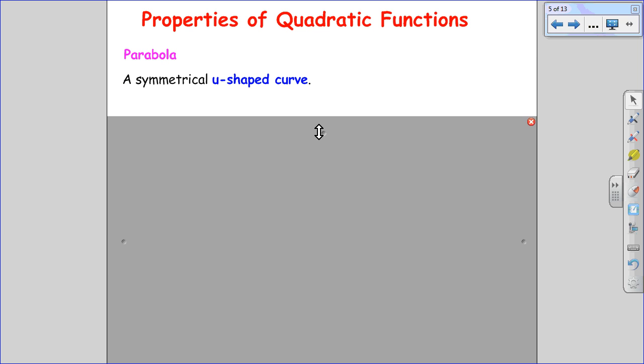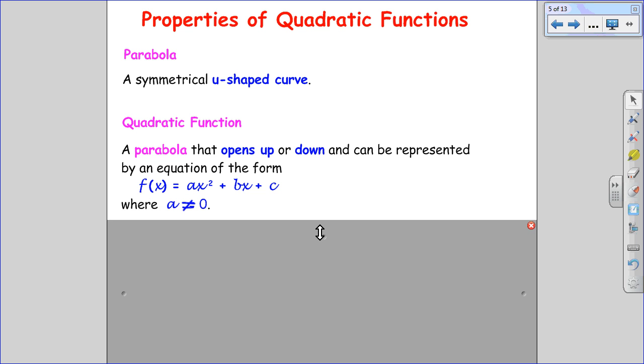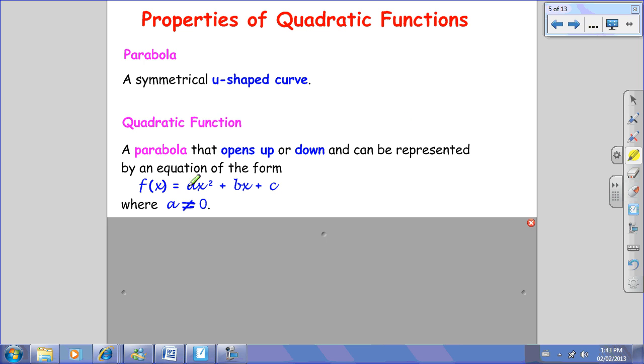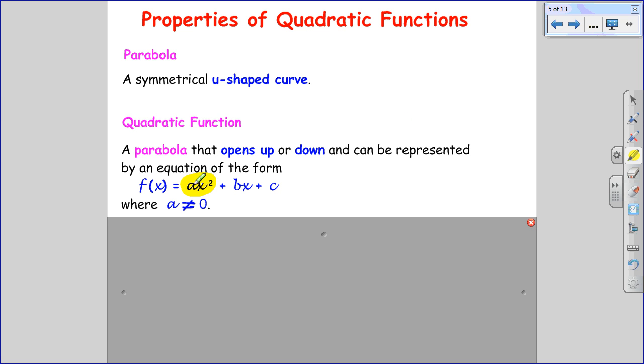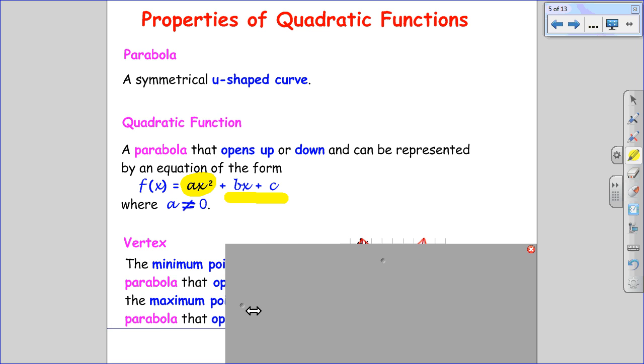Quadratic functions are parabolas, U-shaped curves. But there are special cases of parabolas that open up or down and can be represented by the equation f(x) = ax² + bx + c. And remember, a can't be 0 because this term is 0. I'm left with a linear function.